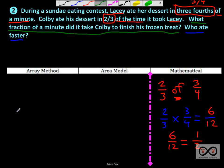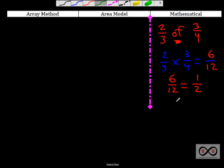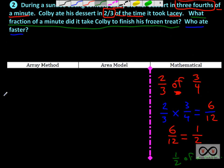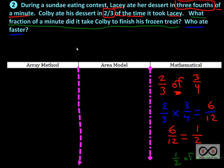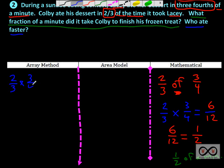We've got the mathematical job done. Now we want to show a deeper understanding of fractions using the array method, a visual fraction model. Let's rewrite that original equation: two-thirds times three-fourths equals. Our denominators will tell us how to set up our array. We're going to use one array for both denominators — three and four. So we'll do three across and four down, because our denominators are three and four, giving us a three-by-four array.